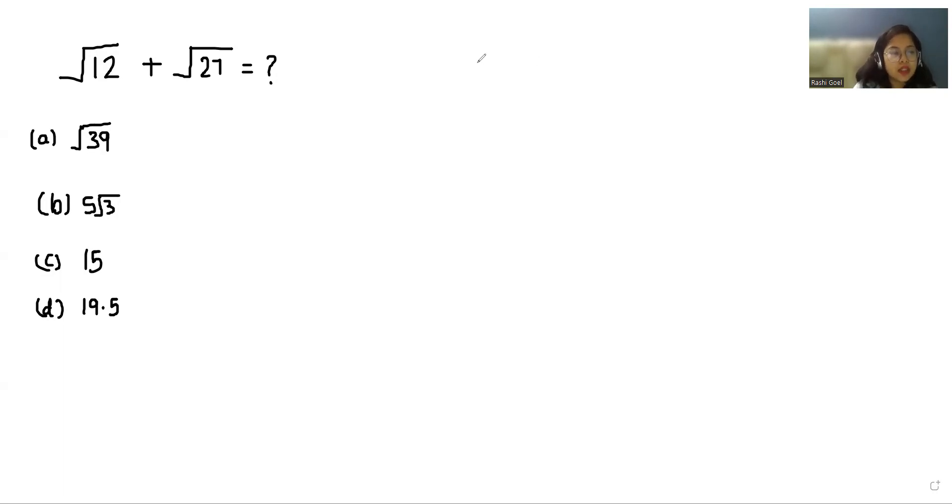We have four options: that is square root of 39, b is 5 root 3, c is 15, and d is 19.5.